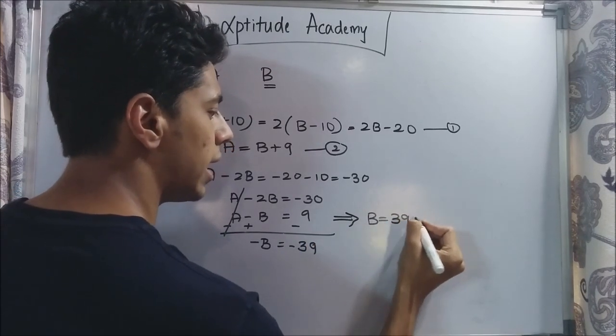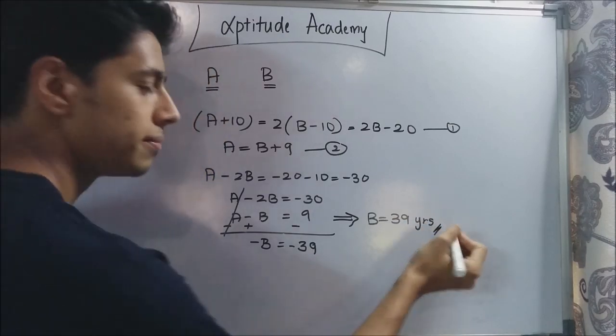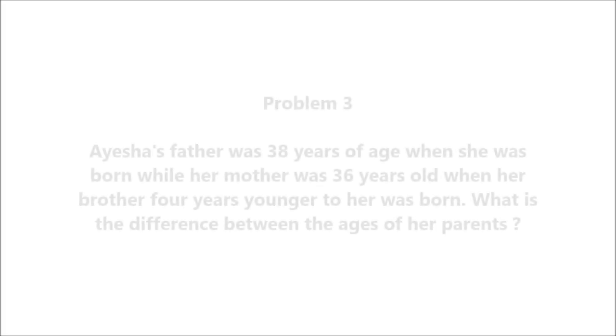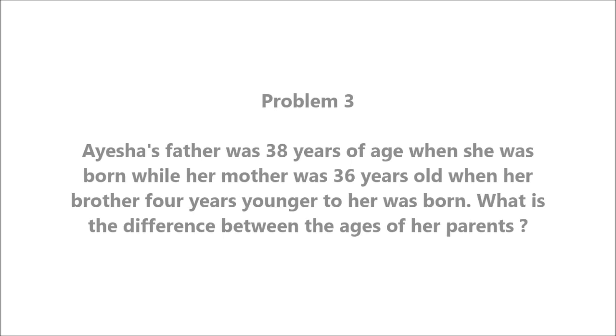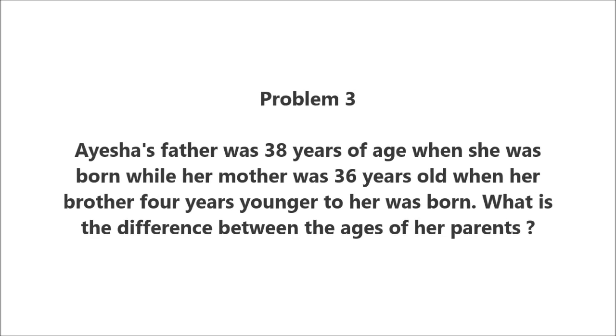B equals 39 years. Easy, right? Problem three: Aisha's father was 38 years of age when she was born, while her mother was 36 years old when her brother, who is four years younger than her, was born. What is the difference between the ages of her parents?